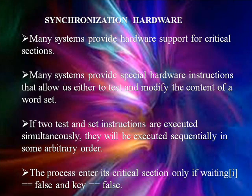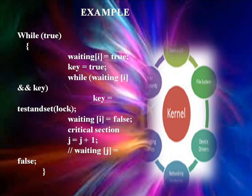Synchronization hardware. Many systems provide hardware support for critical sections. Many systems provide special hardware instructions that allow us either to test and modify the content of a word atomically. If two test-and-set instructions are executed simultaneously, they will be executed sequentially in some arbitrary order. The process enters its critical section only if waiting[i] is equal to false and key is equal to false.